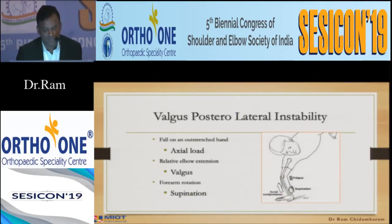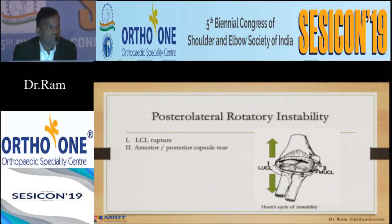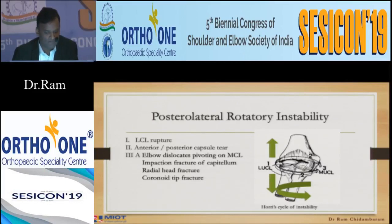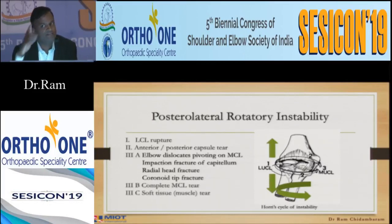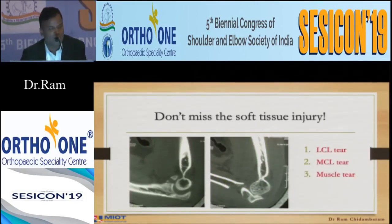When the patient falls with an axial load with a valgus component, the forearm gets into supination, putting tremendous stress on the lateral side of the elbow. The first stage is lateral collateral ligament rupture associated with a capsular tear. Second, it rotates and pivots against the MCL, causing impaction fracture of the capitulum or radial head, and the coronoid tip fracture can happen at any level. Finally the medial side also fails. Don't miss the soft tissue injury on X-ray — the LCL, MCL, and muscle tears are not seen on X-rays.